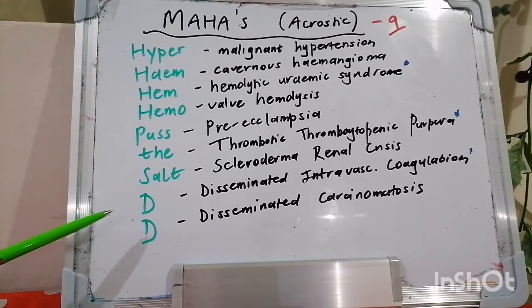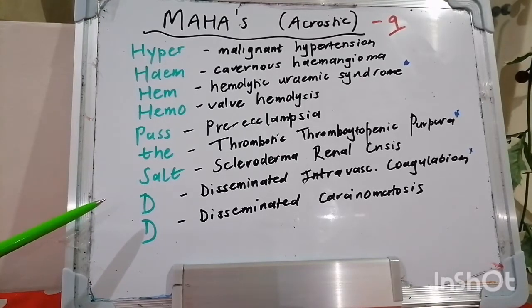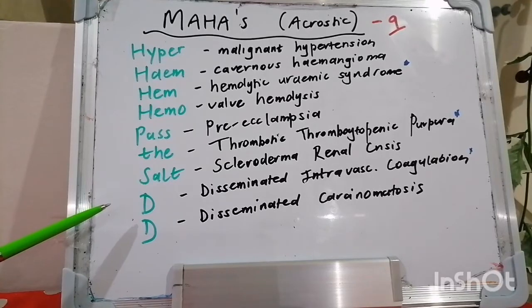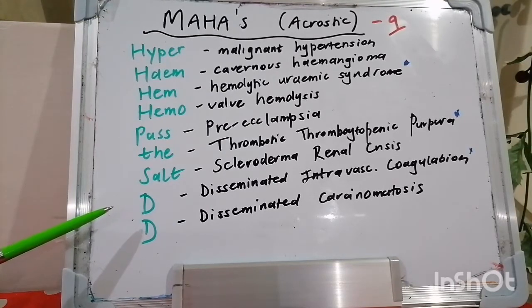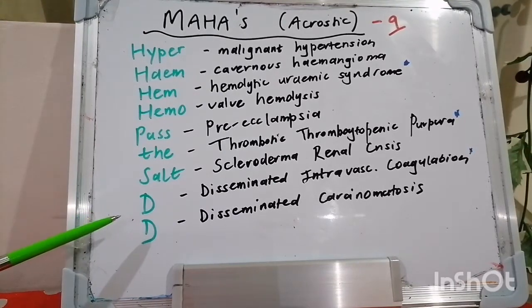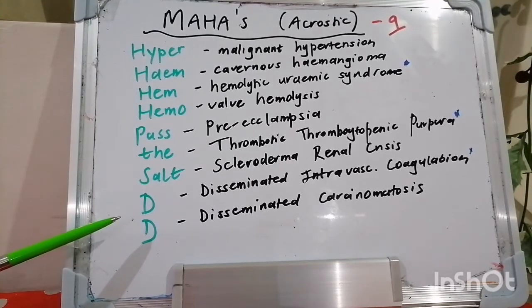Obstetric causes include abruptio placentae, preeclampsia, and amniotic fluid embolus. Clinical features of DIC include microangiopathic hemolytic anemia with thrombocytopenia, bleeding and/or thrombosis, and possible ischemia, with a raised INR and raised PTT. Fibrinogen is typically diminished, although it can be normal or even elevated in the acute phase.